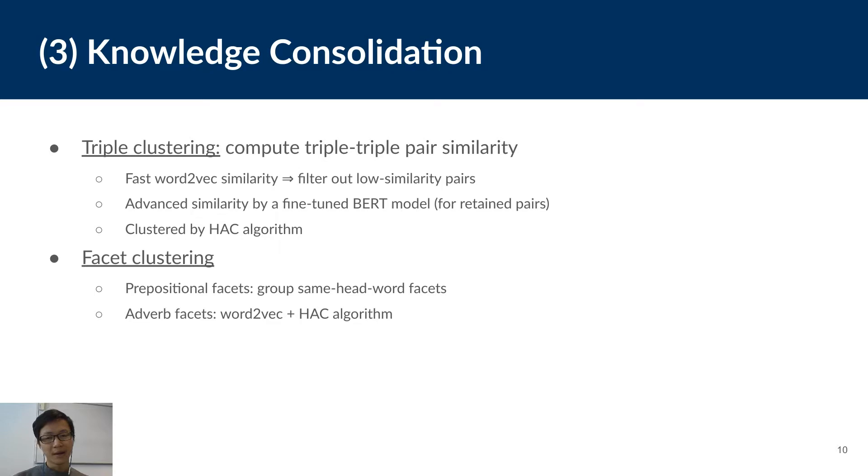First, we filter out low similarity pairs using fast pre-trained Word2Vec embeddings. Next, we compute advanced similarity with a fine-tuned BERT model for the retained pairs. The reason for this is the BERT model has much more parameters than the Word2Vec model and it is proved to have better representations for natural language. But that also comes with the cost that the computation time for BERT is much longer than for Word2Vec. Finally, the similarities are used by the HAC algorithm, the standard clustering algorithm, to get the triple clusters.